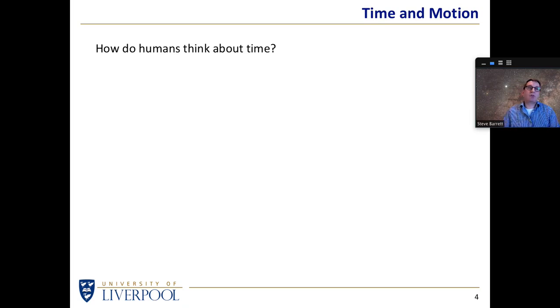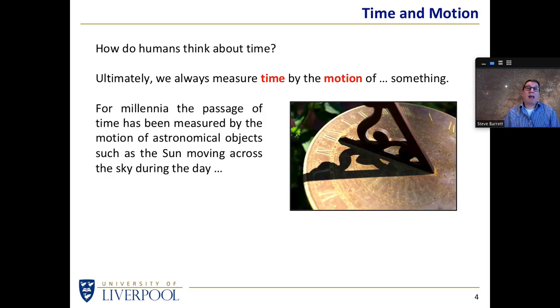So firstly, let's think about time. The way we think about time is always with respect to motion. In other words, we measure the passage of time by looking at something moving. For millennia, of course, the passage of time has been measured by looking at astronomical objects.